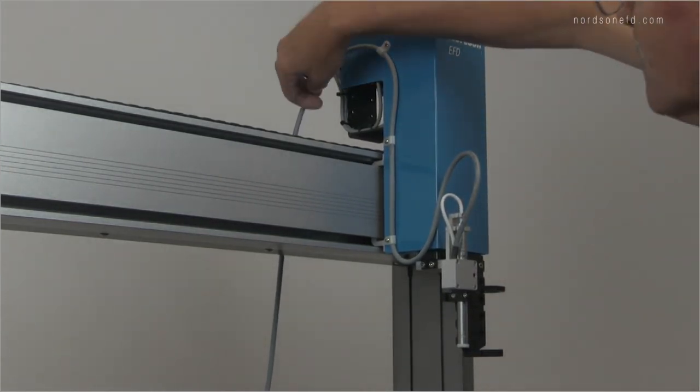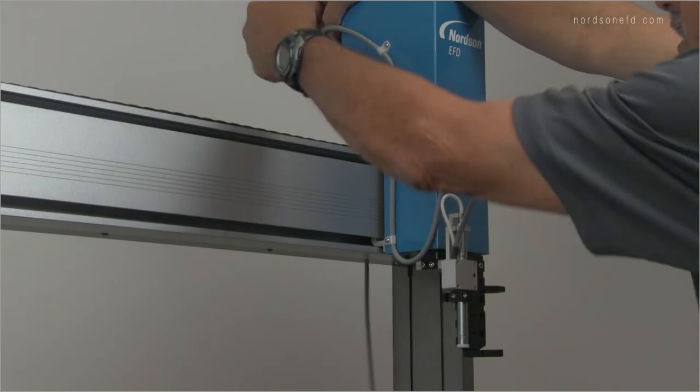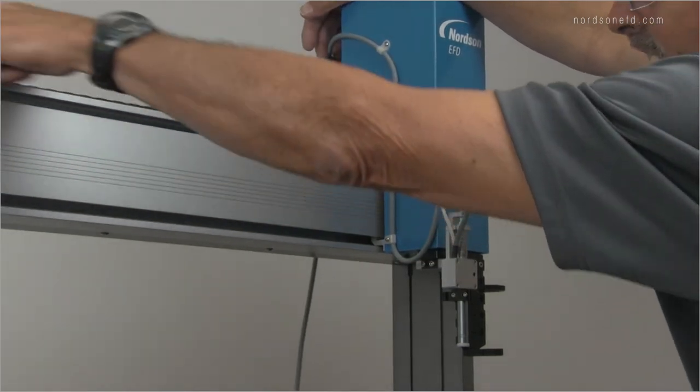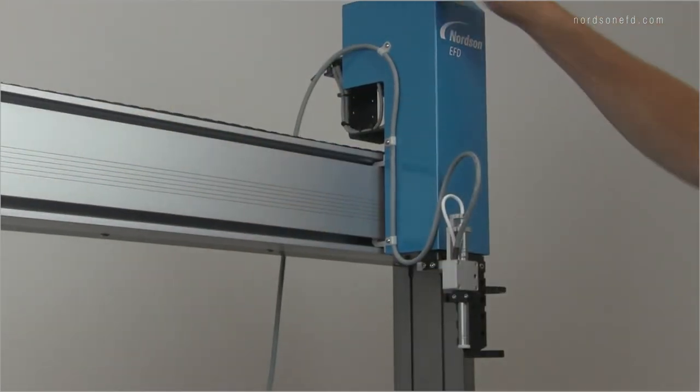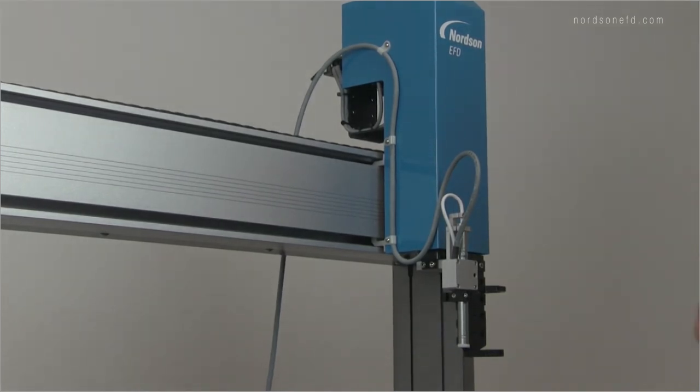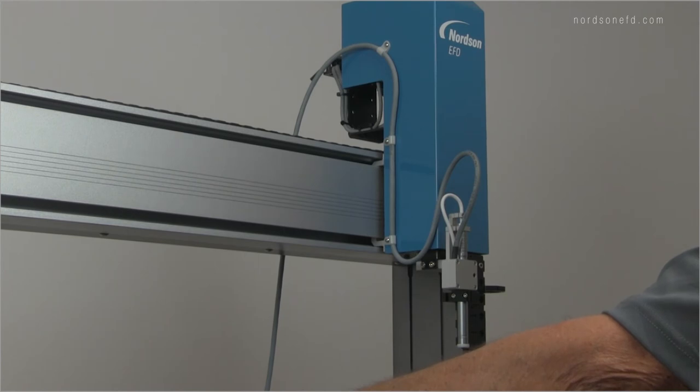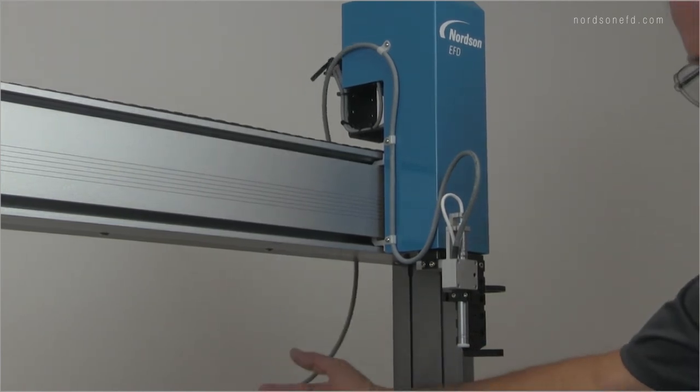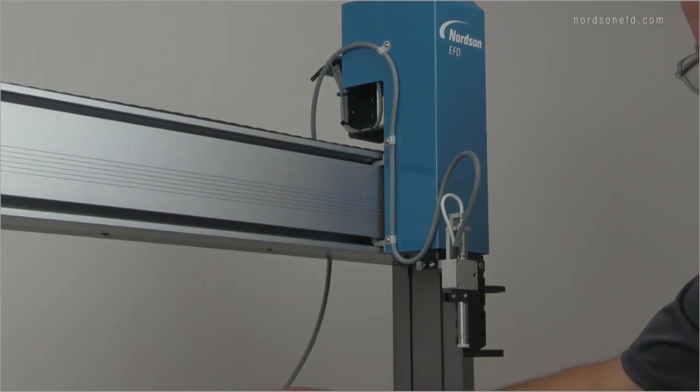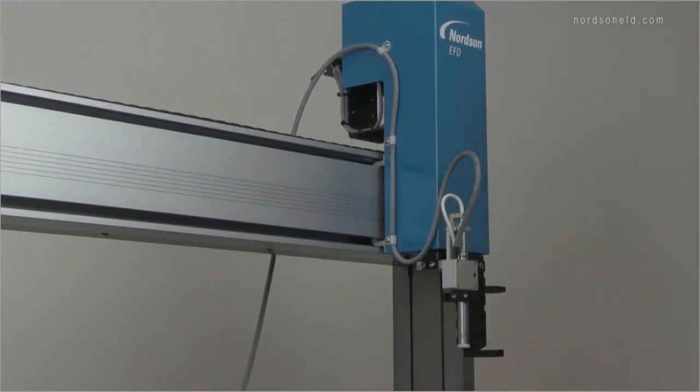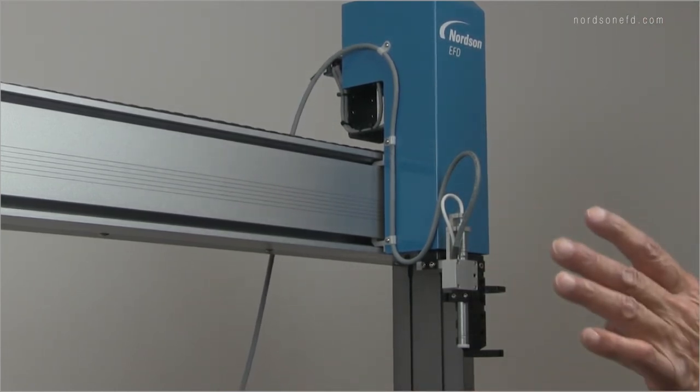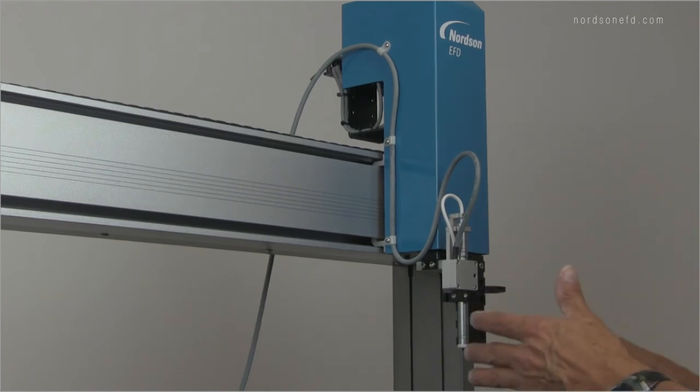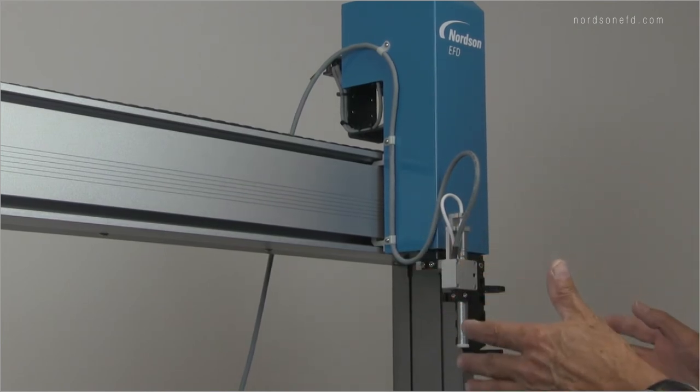The next step is going to be to dress this camera cable around the top of the Z head and down this tractor to the back of the robot. Before we do that, one of the things we can do is make sure that the camera is aligned over the tip detect device. What we can do to do that is simply plug this in and we'll power up the robot and turn the vision system on so we can see exactly what the camera is seeing. I'm not going to dress it until I've got that squared away because it may require that I change something here.